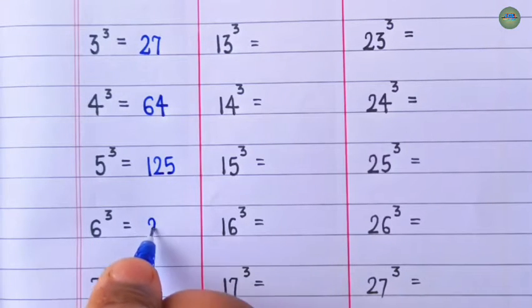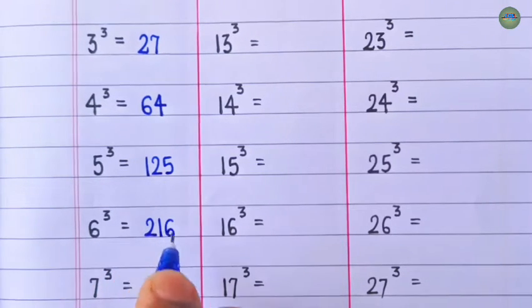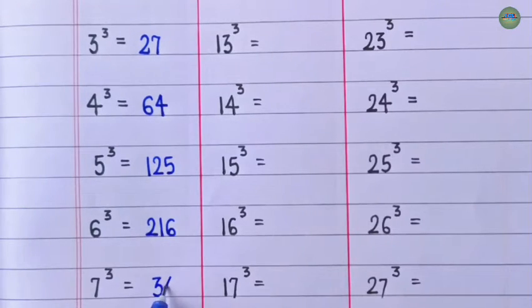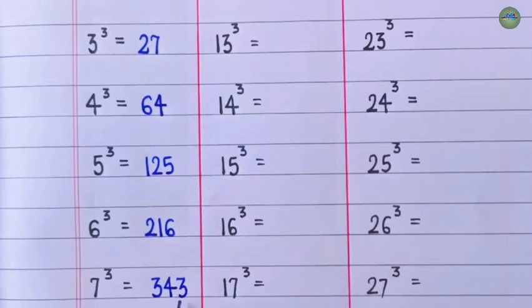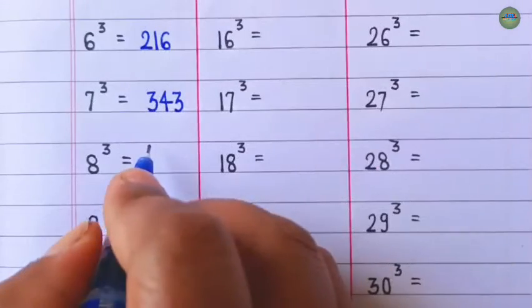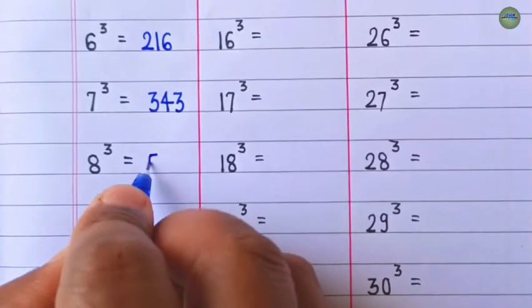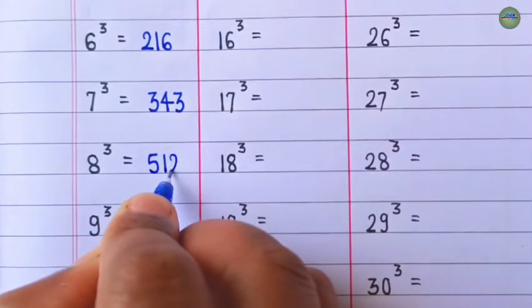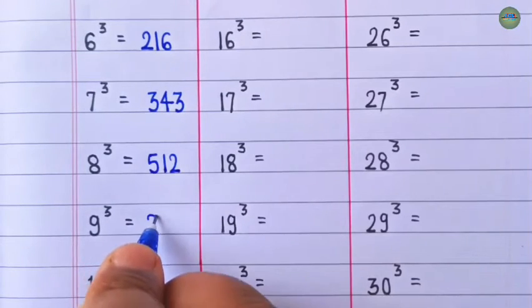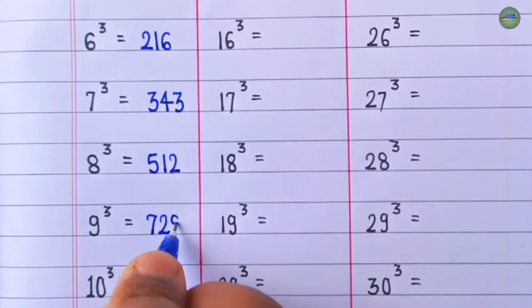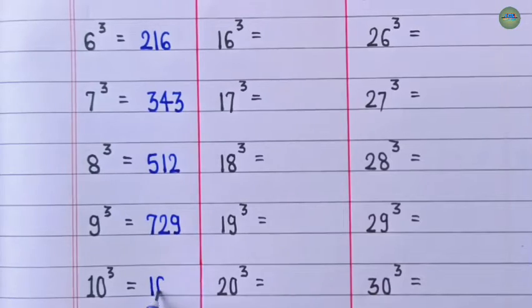Cube of 6 is 216. Cube of 7 is 343. Cube of 8 is 512. Cube of 9 is 729. Cube of 10 is 1,000.